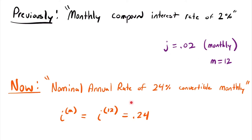These two rates are actually the same rate. The 24% nominal annual rate convertible monthly and the 2% monthly compounded rate are equivalent. If we take our nominal rate of 0.24 and divide it by m, which is 12, we get 0.02 — equal to our monthly compound rate.